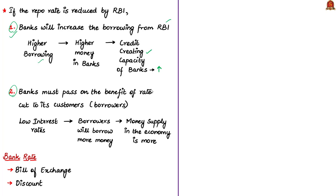Second, the banks will have to pass on the rate cut benefits to their customers — the borrowers who borrow money from the bank. Because of the policy repo rate cuts, the bank rates have been adjusted to 6%. So, the banks have to lend money to customers at 6% or less than the 6% interest rate fixed by RBI. If the interest rates are lower and attractive, customers and businesses will borrow more money, so the money supply in the economy will increase.